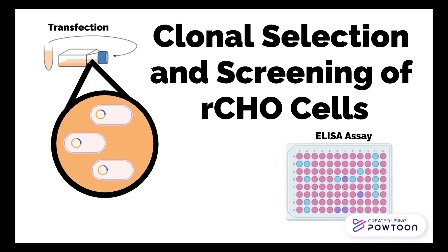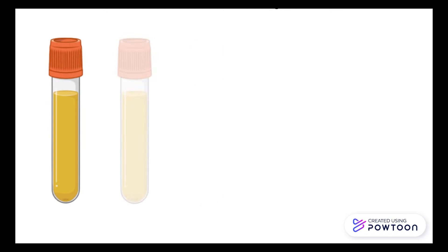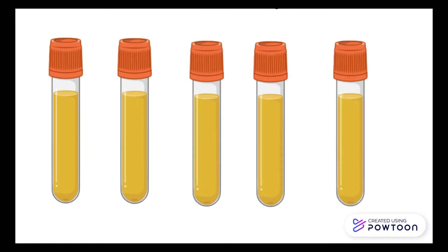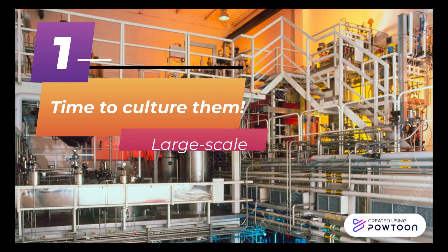The cells undergo a screening, usually by ELISA assay, to filter out cells that have low monoclonal antibody activity. Once we obtain CHO cells confirmed to produce monoclonal antibodies, we culture them at large scale.